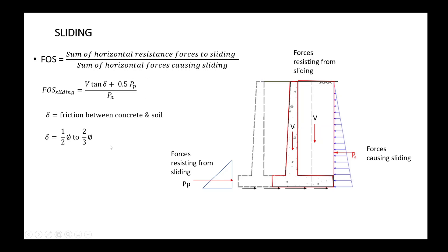To get the factor of safety due to sliding, we have the sum of horizontal resistance forces to sliding divided by the sum of horizontal forces that cause sliding. The equation uses V times tan(delta), where delta is the friction angle between the concrete and soil, plus 0.5 passive pressure, divided by the active pressure.